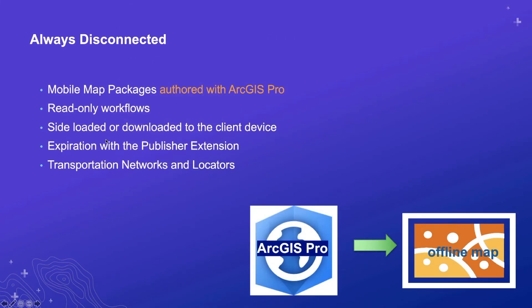There are a few approaches to getting these offline maps to a runtime app. One of them is to generate a single mobile map package object, authored by ArcGIS Pro, sideloading that mobile map package file directly onto your device and letting the runtime work with it. This supports read-only workflows. It's a generated file that's sideloaded to the device, but it can include locators and transportation networks.